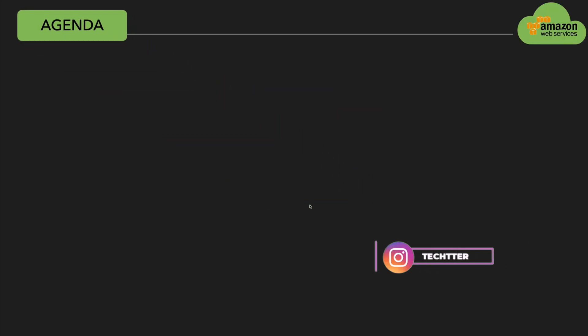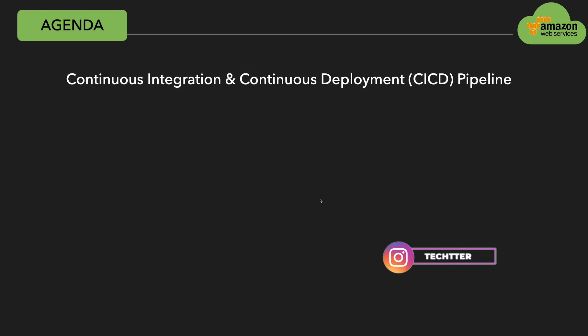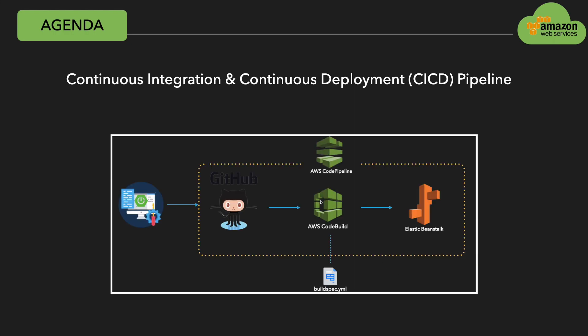By the end of this video, as a developer, you will be confident enough to build a continuous integration and continuous deployment pipeline as shown in the diagram. Initially, we'll build a simple Spring Boot application, then push the code into a new GitHub repository. Next, we'll look at how to create an Elastic Beanstalk environment using the AWS console. As a final step, we'll see how to create a CodeBuild project and a CodePipeline to connect the GitHub repository so that it can pull the code, build, and deploy the application on Elastic Beanstalk.